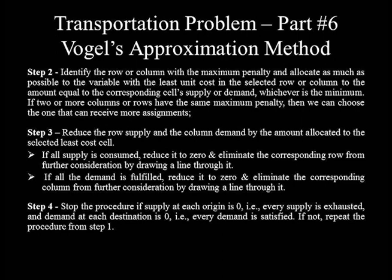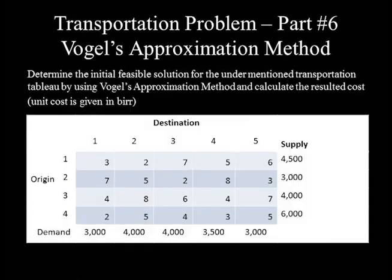For better understanding of this method, let's set an initial feasible solution for a transportation problem. For this same problem, we set initial feasible solutions using the least cost cell method and northwest corner cell method in two separate videos. The intent for using the same problem across these three methods is to compare the quality of the initial feasible solution obtained by each method. Now let's set the initial feasible solution following the steps of Vogel's approximation method.